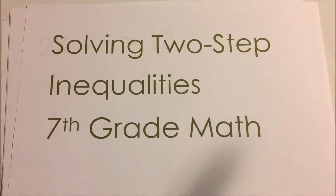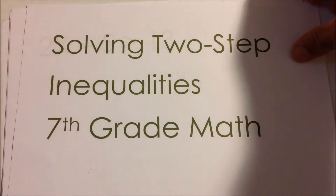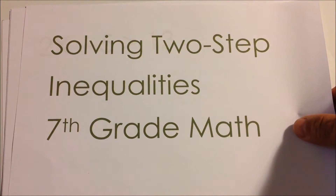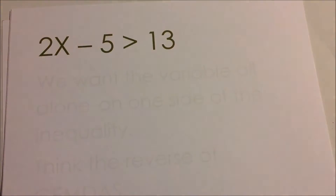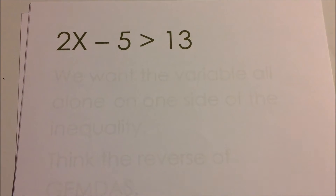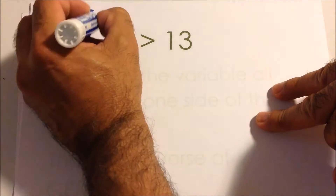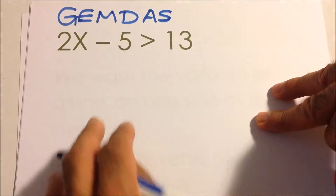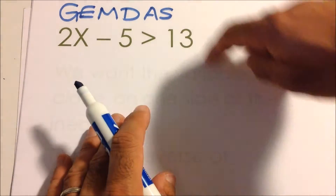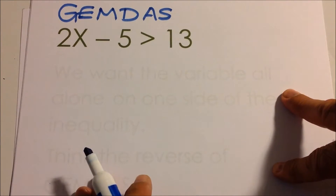Here's a video on solving two-step inequalities. We have solved two-step equations, so it's pretty much the same thing — we've done addition, subtraction, multiplication, and division, but now we'll do it with two steps. When we're doing two-step equations, it's important to remember GEMDAS — we used to call it PEMDAS — and we want to do the reverse of GEMDAS when we do equations.